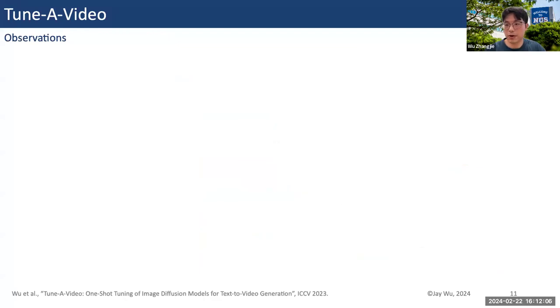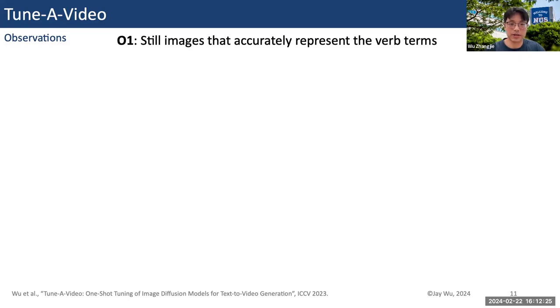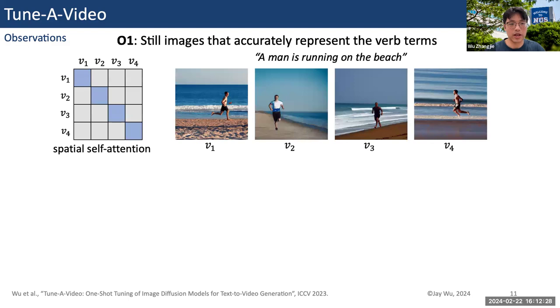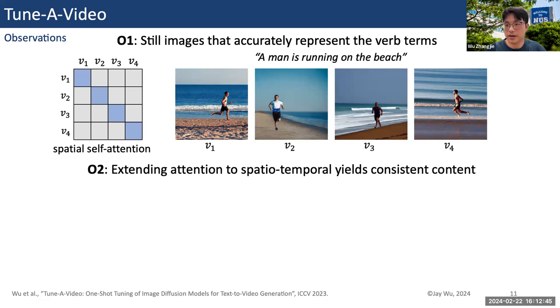Before we go into the specific method, I would like to share some observations we made in text-to-image diffusion models. The first observation is that the stable diffusion model can accurately represent verb terms — for example, if we need to generate a man running on the beach, stable diffusion can already understand the specific verb term 'running' and generate it. This is achieved by spatial self-attention to maintain spatial global consistency.